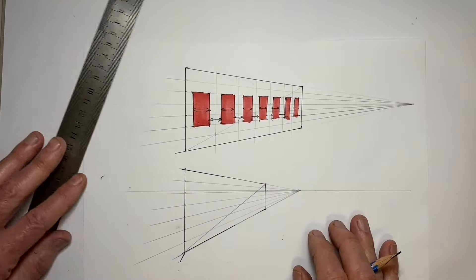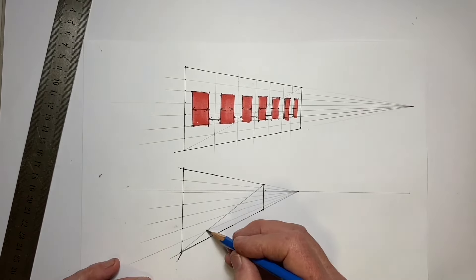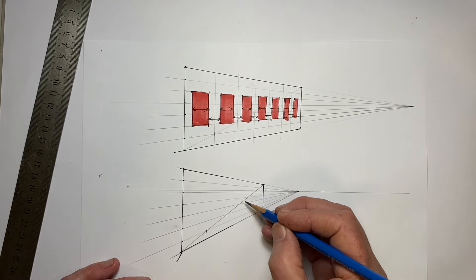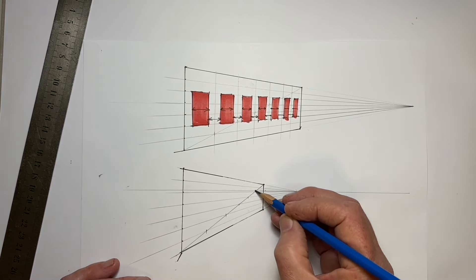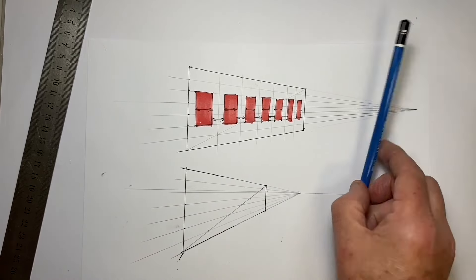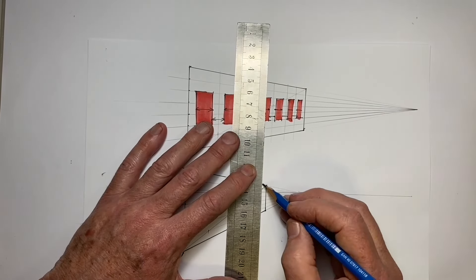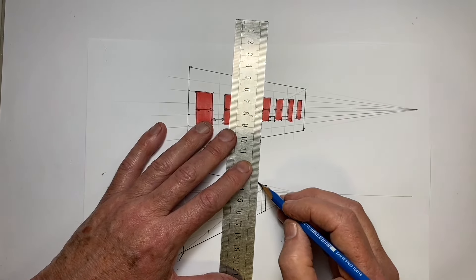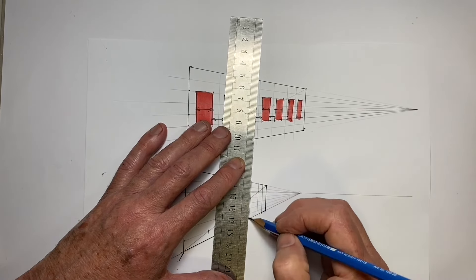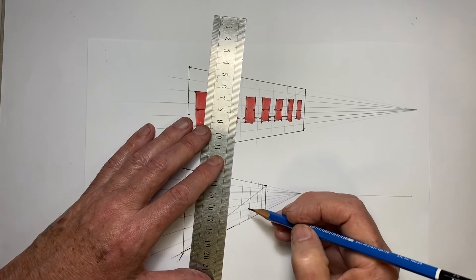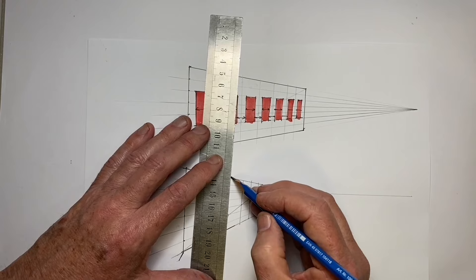I put the diagonal line in and I mark where it crosses the line joining each of these seven divisions with my vanishing point. Now I again put these vertical lines in, and we can see that they end up being much closer together than in the example above.